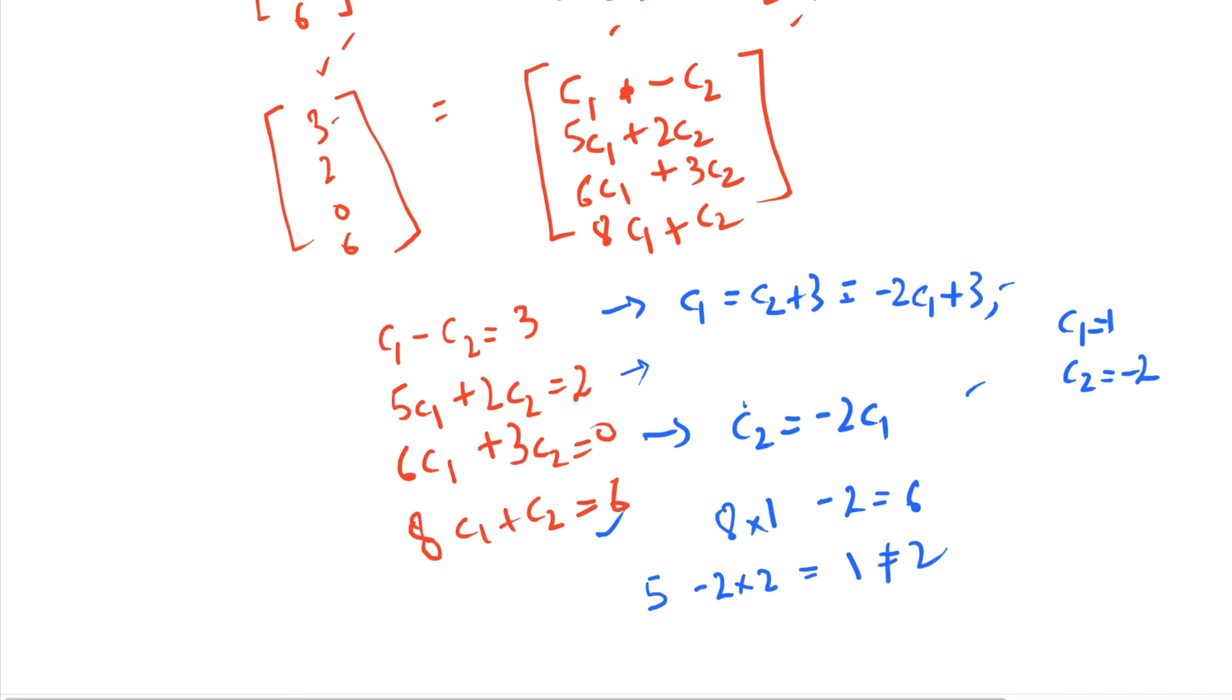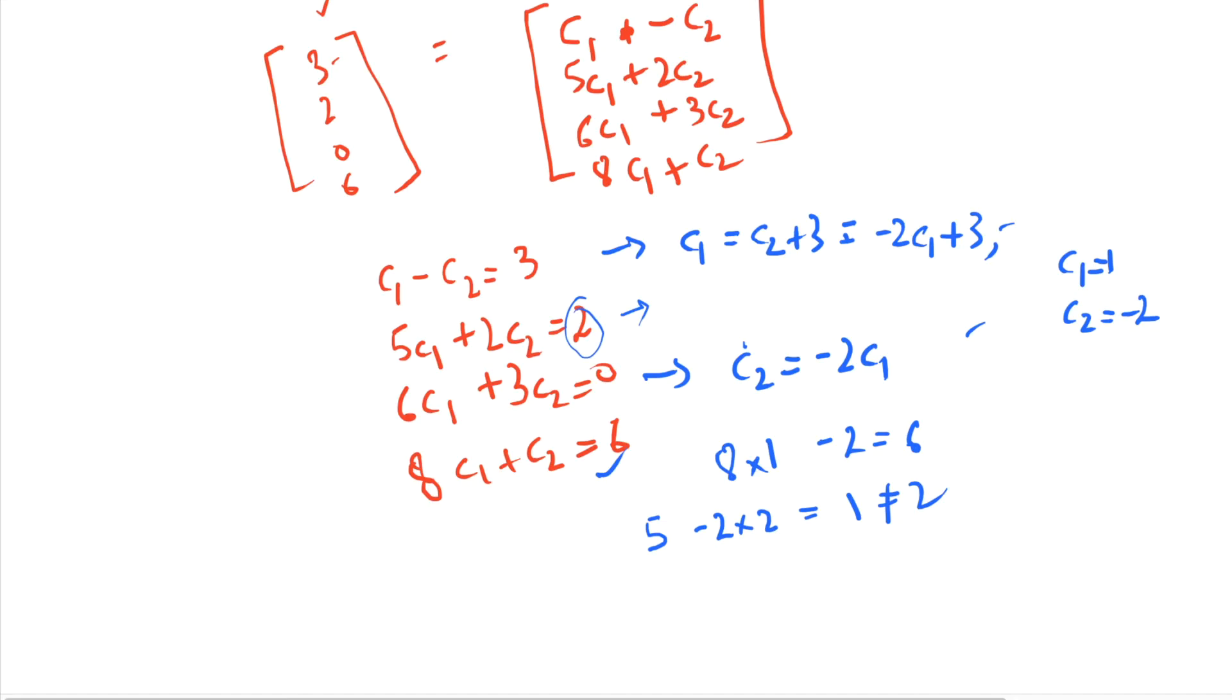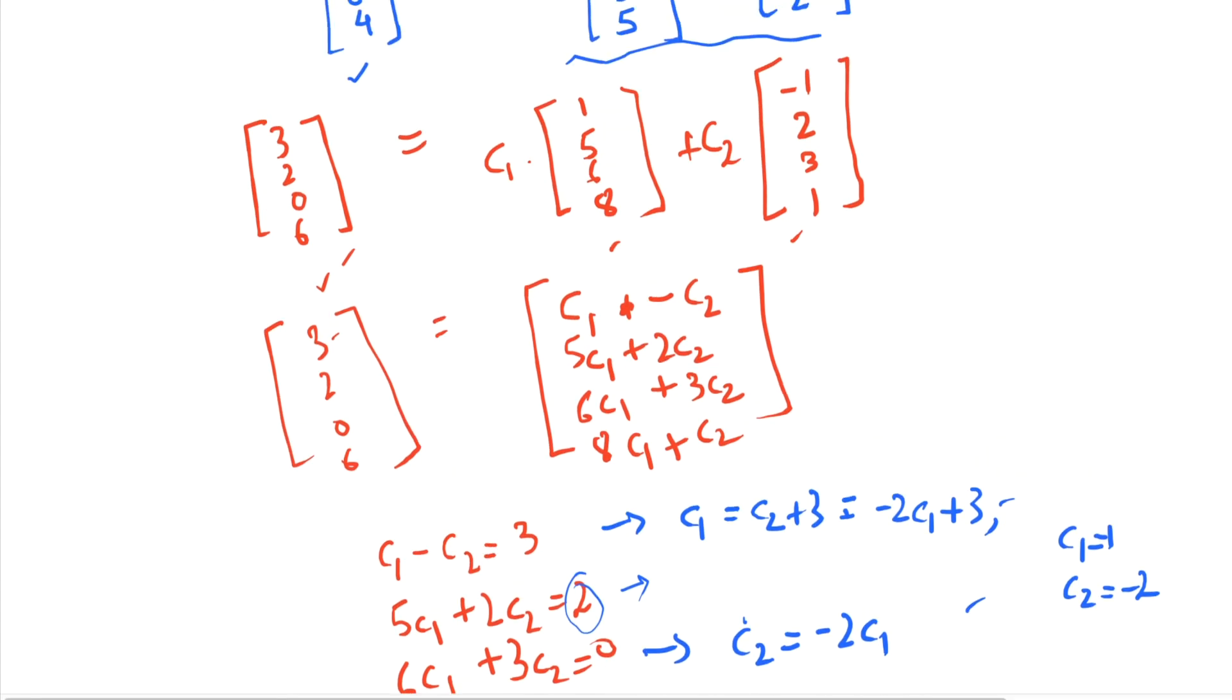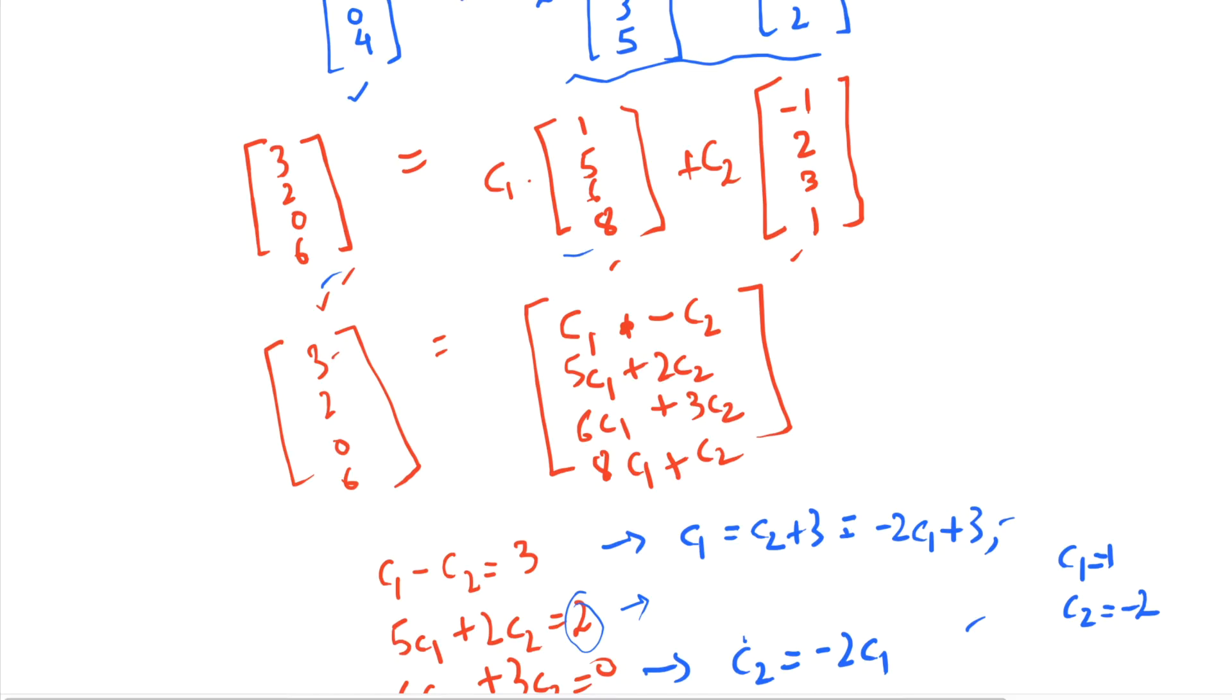This is not equal to 2. So what it effectively means here is that there are no scalars c1 and c2 for which this equation can hold true, and hence [3, 2, 0, 6], this vector, can never be expressed as a linear combination of these two vectors.